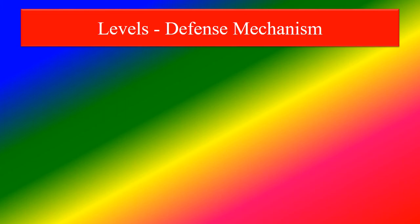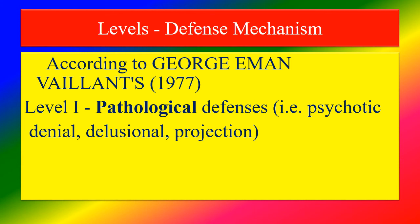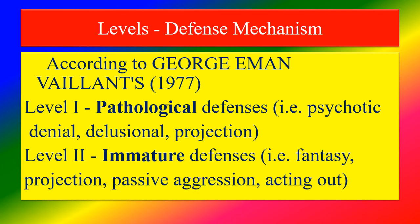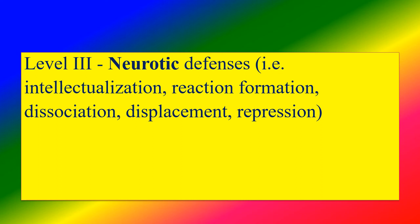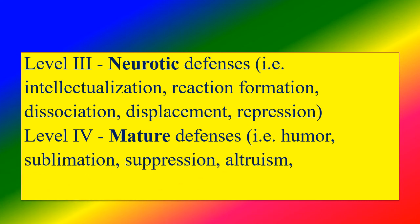Levels of Defense Mechanisms according to George Vaillant: Level 1 — Pathological Defense: Psychotic Denial, Delusional Projection. Level 2 — Immature Defense: Fantasy, Projection, Passive Aggression, Acting Out. Level 3 — Neurotic Defense: Intellectualization, Reaction Formation, Dissociation, Displacement, Repression. Level 4 — Mature Defense: Humor, Sublimation, Suppression, Altruism, and Anticipation.